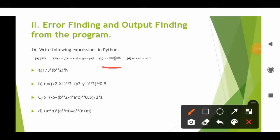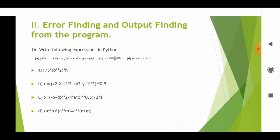Next expression: x equals negative b plus or minus the square root of b squared minus 4ac, divided by 2a. In Python: x = (-b + (b**2 - 4*a*c)**0.5) / (2*a). Next expression: a to the power n times a to the power m equals a to the power (n plus m). In Python: a**n * a**m equals a**(n+m). This is how you write expressions in Python.